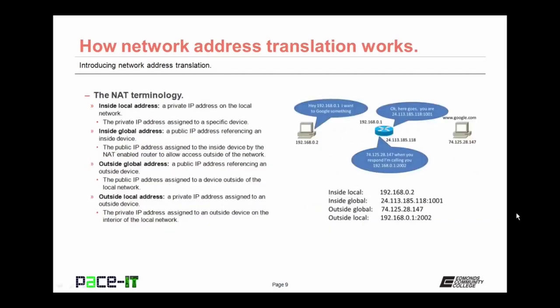Now let's talk about NAT terminology — specifically the types of addresses. We begin with the inside local address, which is a private IP address on the local network — the private IP address assigned to a specific device. Then there's the inside global address, a public address referencing an inside device. The inside global address is the public IP address assigned to the inside device by the NAT-enabled router, allowing access outside of the network.